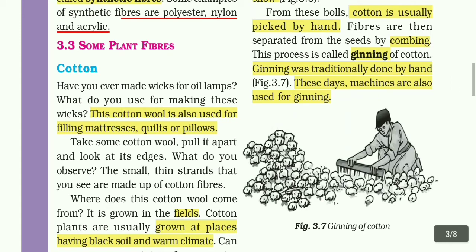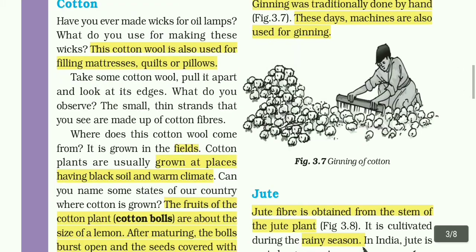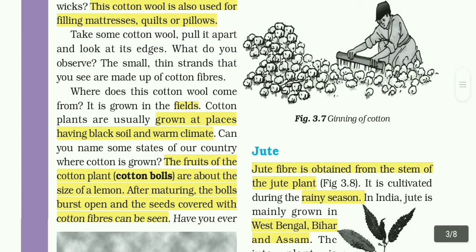What does cotton come from? It is grown in the fields. Cotton plants are usually grown at places having black soil and warm climate. The fruits of the cotton plant are about the size of a lemon. After maturing, the bolls burst open and the seeds covered with cotton fibers can be seen.